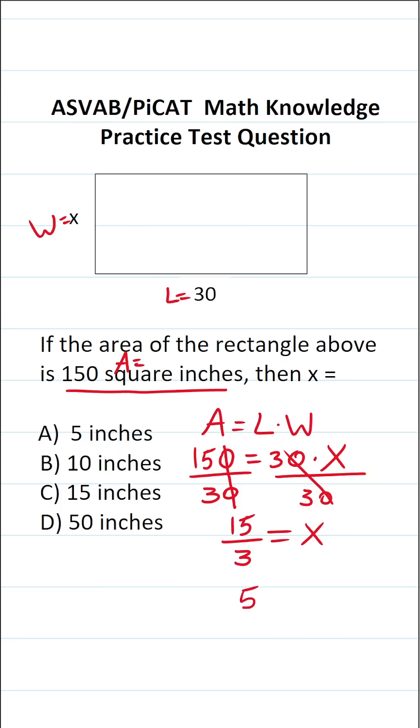This simplifies to 15 divided by 3. 15 divided by 3 is 5. So we know x is going to be 5 inches. So the answer to this one is A.